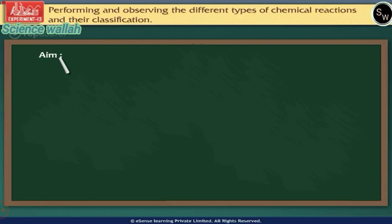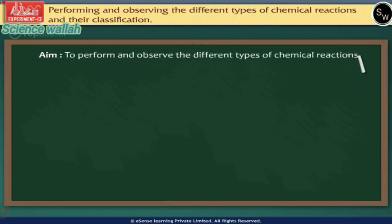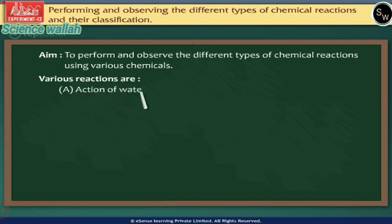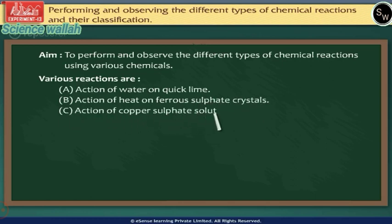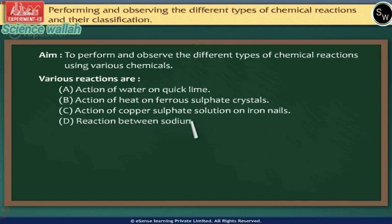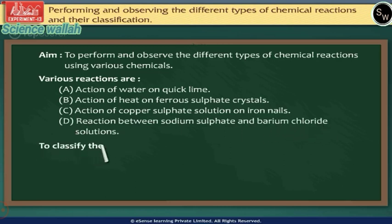The aim of the experiment is to perform and observe the different types of chemical reactions using various chemicals. The various reactions are: action of water on quick lime, action of heat on ferrous sulphate crystals, action of copper sulphate solution on iron nails, and reaction between sodium sulphate and barium chloride solution.